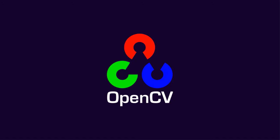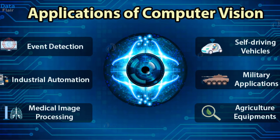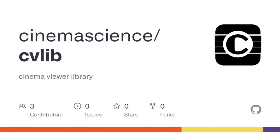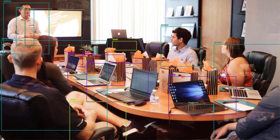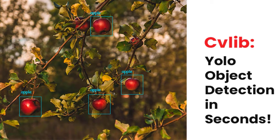OpenCV is an open source image processing library that is very widely used not just in industry but also in the fields of research and development. Here for object detection we have used the CVlib library. This library uses a pre-trained AI model on the COCO dataset to detect objects. The name of the pre-trained model is YOLOv3.